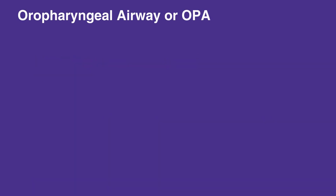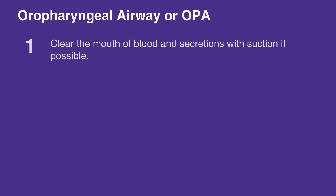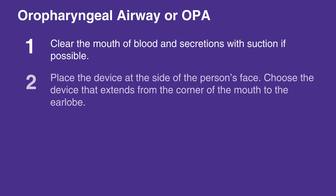To insert an oropharyngeal airway, or OPA, first clear the mouth of blood and secretions with suction if possible. Place the device at the side of the individual's face, making sure to choose a device that extends from the corner of the mouth to the earlobe.